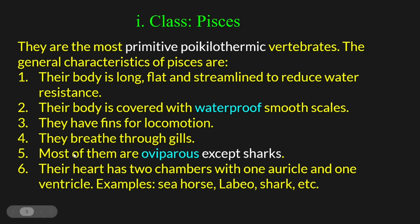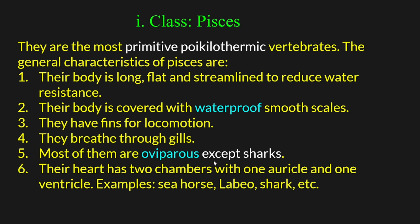Most Pisces are oviparous (egg-laying), except sharks. Sharks are Pisces but give direct birth, which is usually a mammalian characteristic — this is an exception. Their heart has two chambers: one auricle and one ventricle.